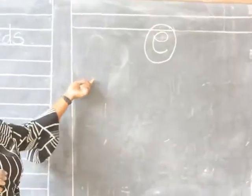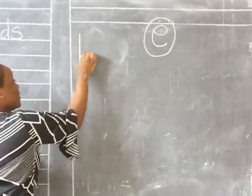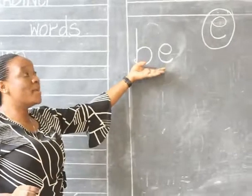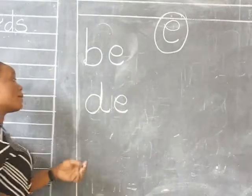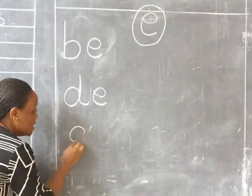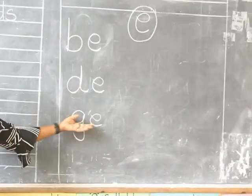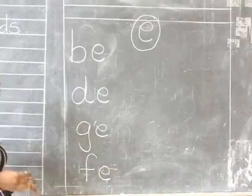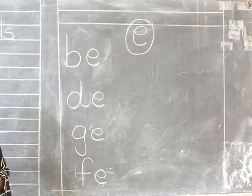I'll start by writing the a-syllables. When I have bu and a, I'll get syllable ba. When I have du and a, I'm going to get syllable da. When I have gu and a, I'm going to get syllable ga. When I have f and a, I'm going to get syllable fa. Let's read the a-syllables again.